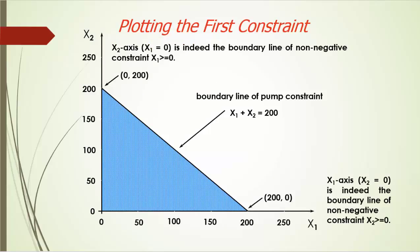To plot the pump constraint x1 plus x2 less than or equal to 200, we start with the boundary line x1 plus x2 equals 200. Since this is a linear function, the boundary line will be a straight line. One way to plot this line is to find two points on the line. An easier way is to make one of the decision variables zero. If x1 is 0, then x2 must be 200; if x2 is 0, then x1 must be 200. The two points on this boundary line are (200, 0) and (0, 200). Find these two points on our graph and connect them to get the boundary line x1 plus x2 equals 200.